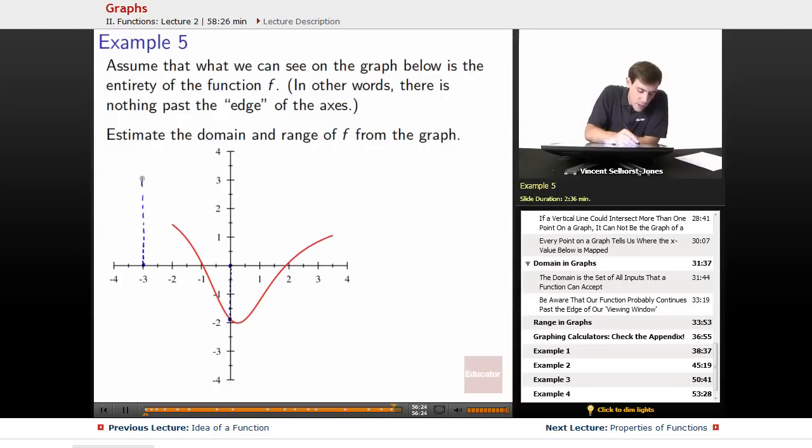Negative 3, there's nobody that it gets graphed to, nobody gets output. So it looks like the edge is negative 2, looks like negative 2 is the very edge.